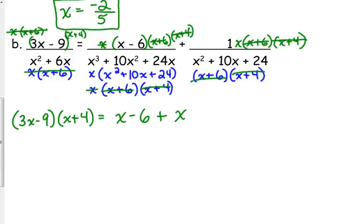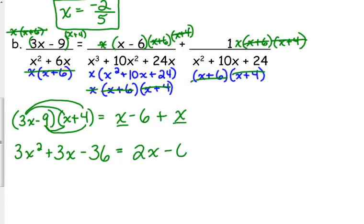Slow down for just a second. Be sure everybody's caught up. Good. All right. We need to foil the left side. 3x times x is 3x squared. The outside gives me 12x. The inside gives me negative 9x, so combined give me plus 3x. If you need to write that out, it's fine. Just saving myself a step. And then the last, negative 9 times positive 4 is negative 36. On the right side, I need to combine those x's. So I have 2x's minus 6.